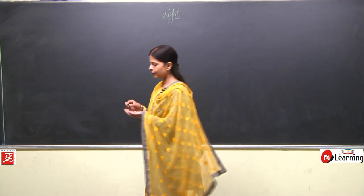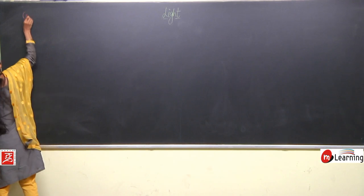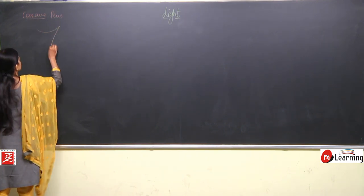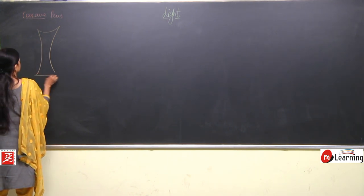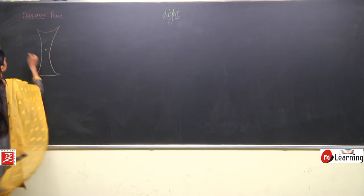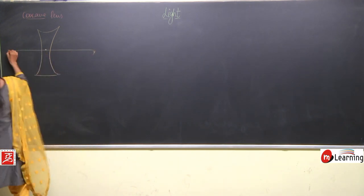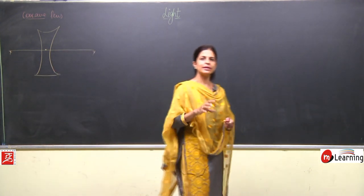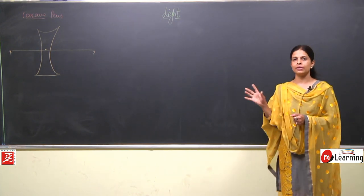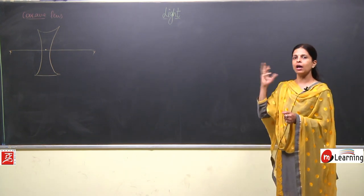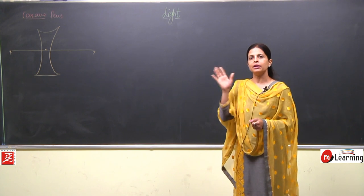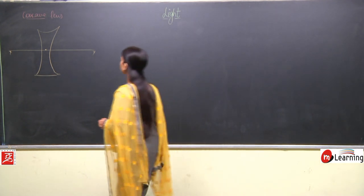Now we will discuss the concave lens. Here is the concave lens with the optical center at the center part and the principal axis. We have studied the convex lens a bit, and after this we are definitely going to talk about how image formation takes place in the convex lens and then in the concave lens.